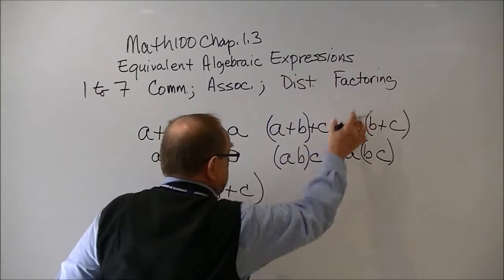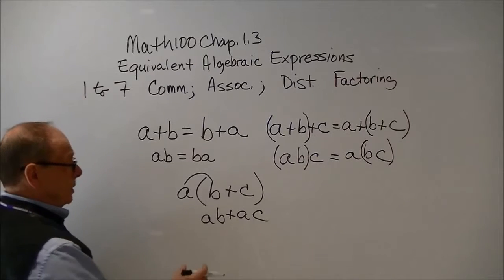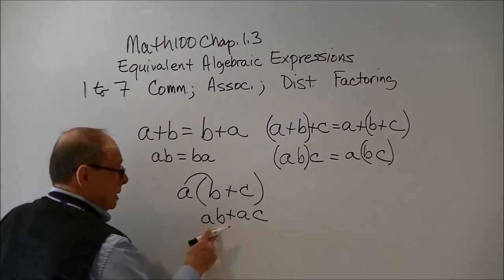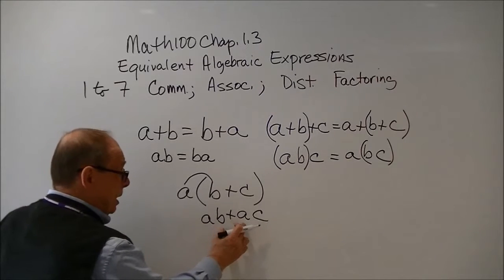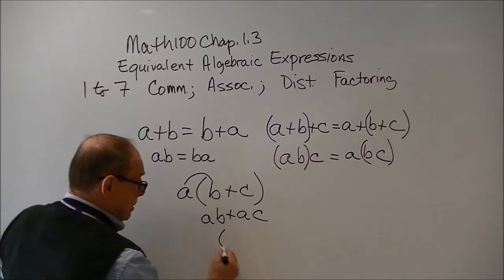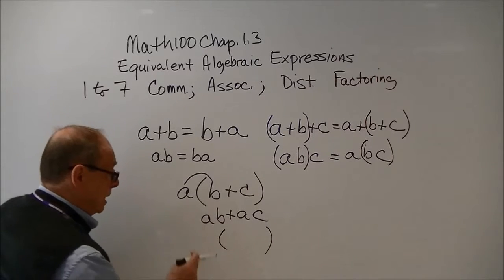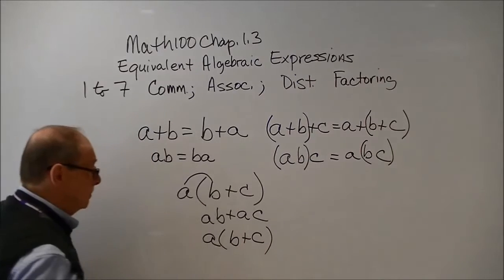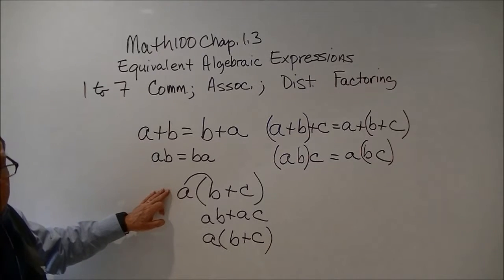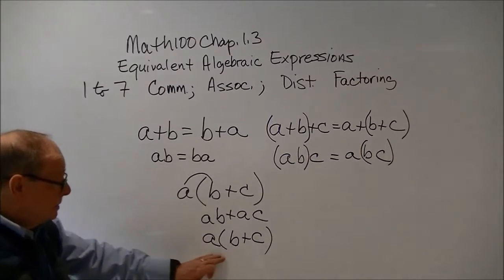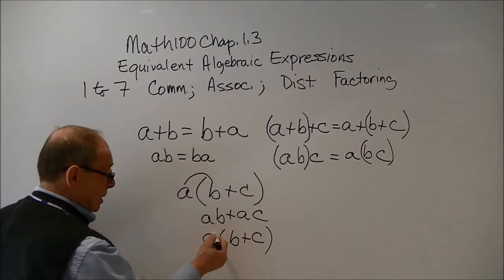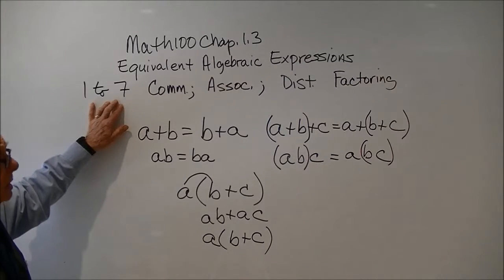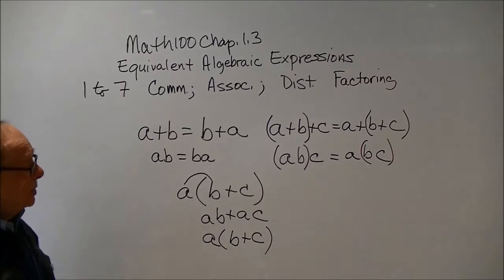Now, this last one, factoring, is a process in which you notice that in this term and this term, there is the common factor a. So they want us to factor out the common factor. So normally what we do is we put a set of parentheses there. And we're going to factor out this common a. And then what we're left with is b plus c. So in a sense, the reverse of the distributive law is factoring. So we go from here to there or from there to there. And one through seven is your challenge to see if you can recognize which of the principles are there.